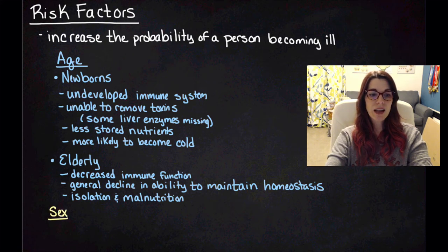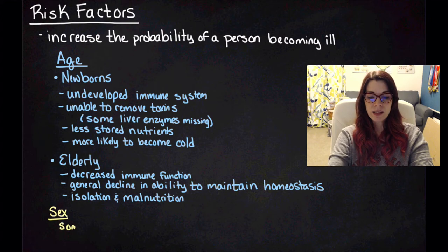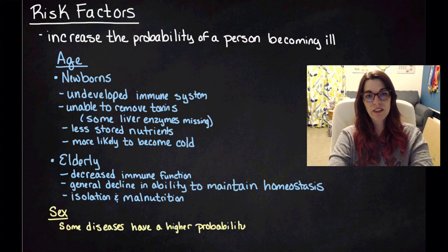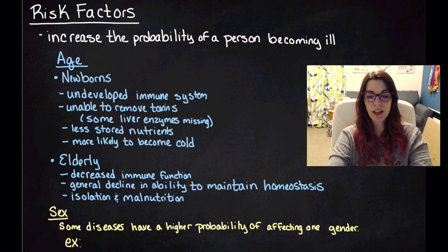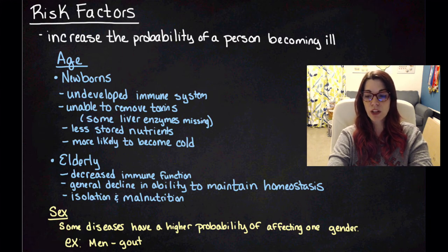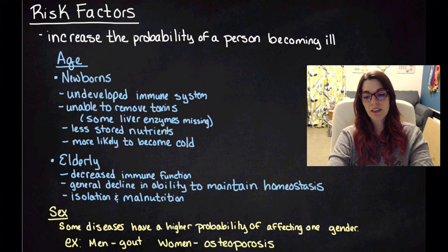The second risk factor we're going to talk about is sex. Some diseases have a higher probability of affecting one gender over another. The two examples we're going to look at: the first is in men, it's gout. Men have a higher probability of developing gout, which is a buildup of uric acid in the body. And women have a higher probability of developing osteoporosis, which you've probably heard of—it's brittle bone disease.